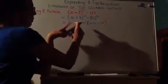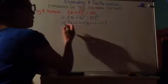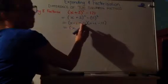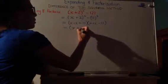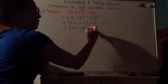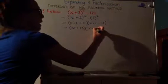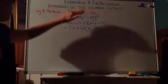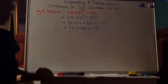Now it's nearly done, but you'll notice that we've got two numbers in here so we can simplify that a little bit more. So x plus 2 plus 11 is plus 13. X plus 2 take 11 is x take 9. So we've started off with something that's two squares and we've ended up with your two factors.